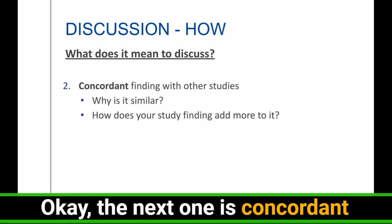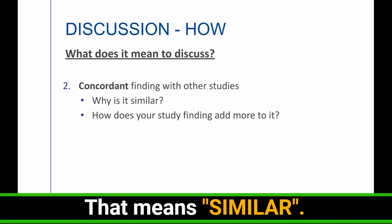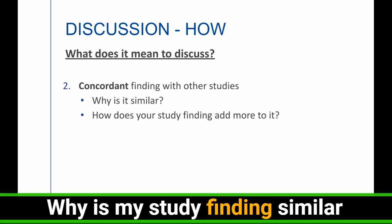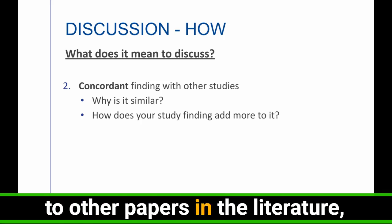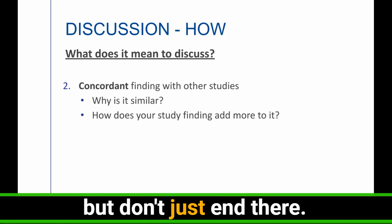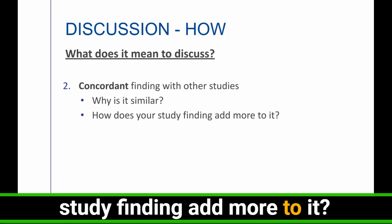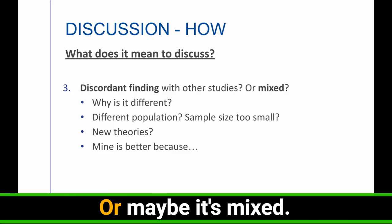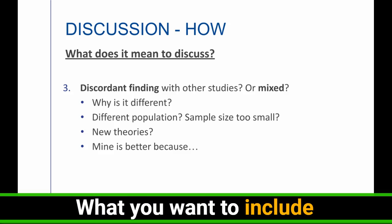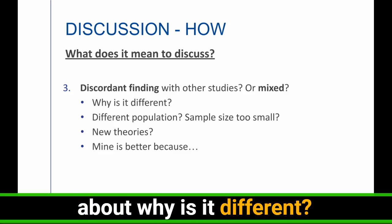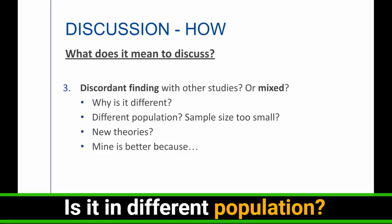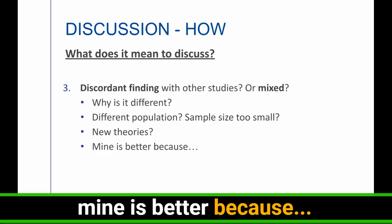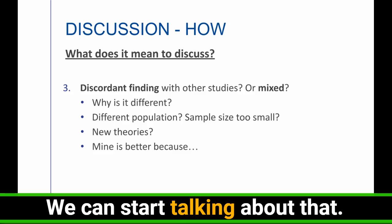The next one is concordant findings with other studies. That means similar. Why is it similar? Why is my study finding similar to other papers in the literature? But don't just end there. Think about how does your study finding add more to it. Then the third one is discordant findings with other studies. Or maybe it's mixed. What you want to include in your discussion is talk about why is it different. Is it in different population? Is it the sample size too small? New theories. Or maybe mine is better because you can start talking about that.